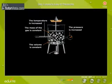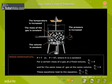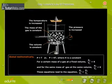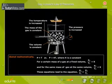Stated mathematically, P is proportional to T, or P is equal to KT, where K is a constant.